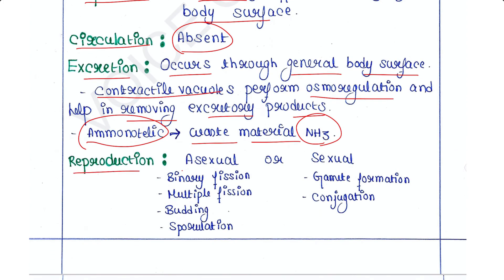Reproduction: both asexual and sexual reproduction occur. In asexual reproduction: binary fission, multiple fission, budding, sporulation. In sexual reproduction: gamete formation occurs, conjugation occurs. These are different types of sexual reproduction.